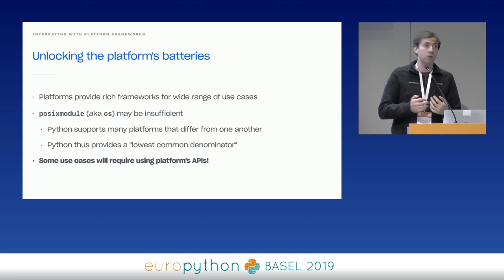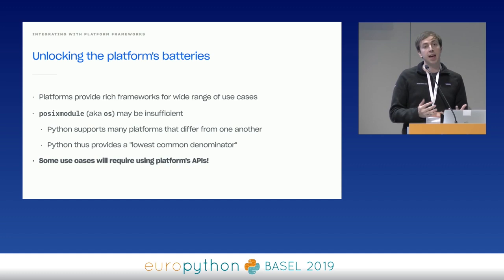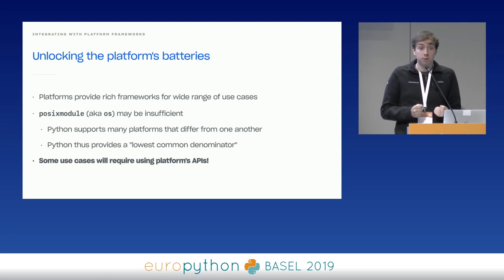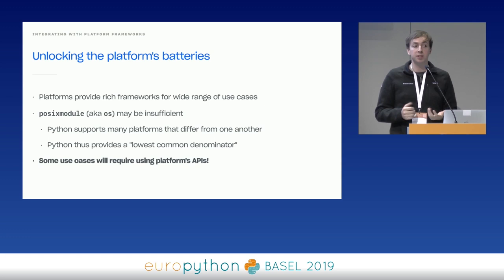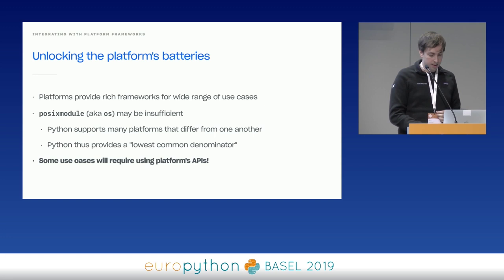That's really because the standard library turns into a lowest common denominator — Python supports so many OSes that the resulting standard library is a somewhat generic set of things that work on all of them. In some cases you'll want to use the platform's APIs directly. For us this was very, very common. Since our job is to sync files and smooth out differences between Windows, Mac, and Linux, it's actually important that we see what those differences are. If you're building an app, you're likely going to need to use some OS APIs directly at some point.